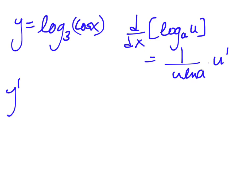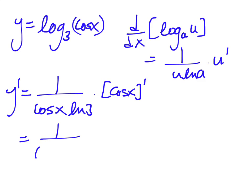d over dx log a of u equals 1 over u times ln of a times u prime. So, I end up with y prime equals 1 over u, so 1 over cos of x ln of 3 times the derivative of cos of x. The derivative of cos of x is negative sine, so I end up with 1 over cos of x ln of 3 times negative sine of x.